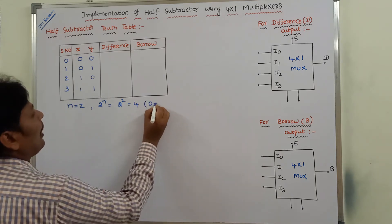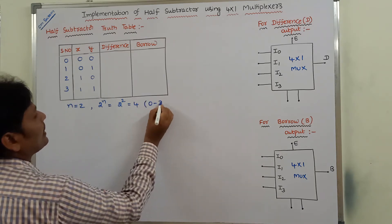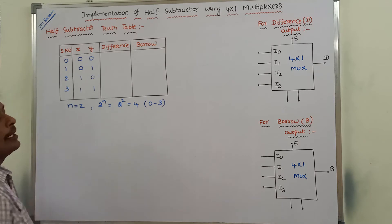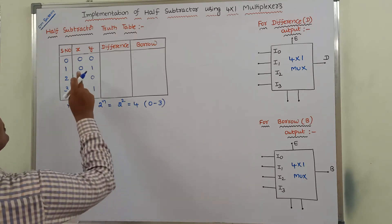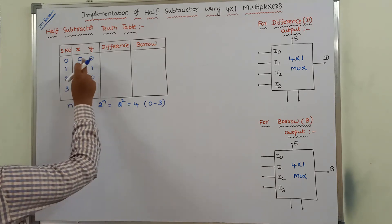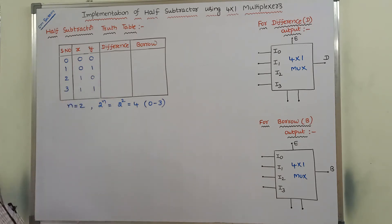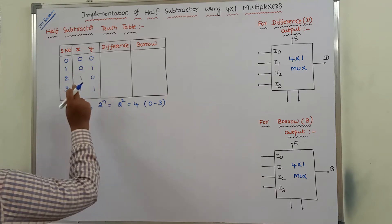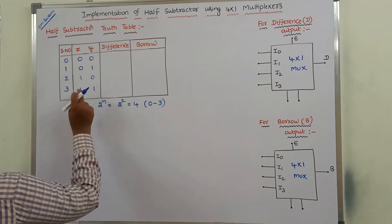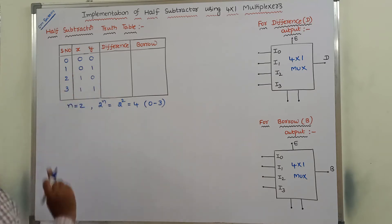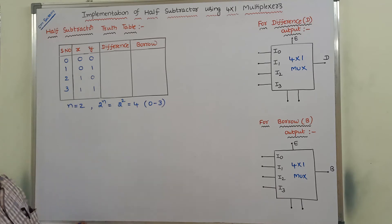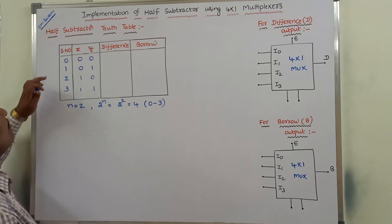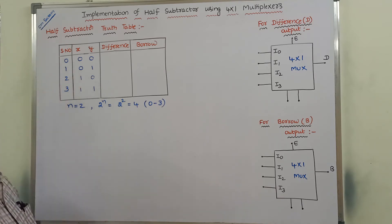So 4 possible input combinations exist with the 2 input variables X and Y, starting from 0 and ending with 3. The 4 possible input combinations are: 0,0 — 0,1 — 1,0 — 1,1. Each and every possible input combination can be represented by using the minterms 0 to 3.